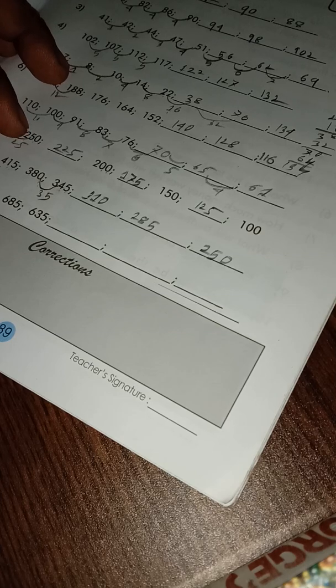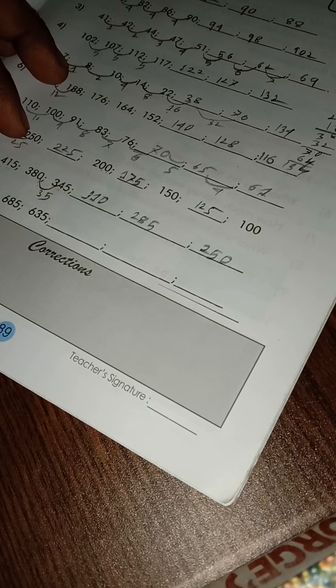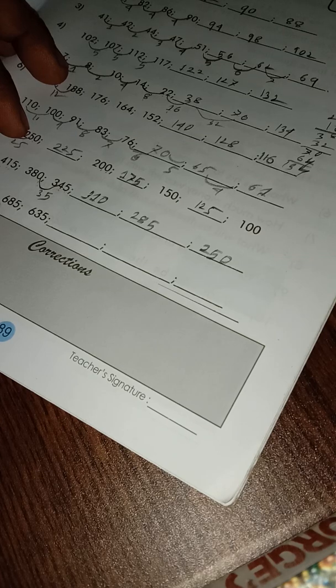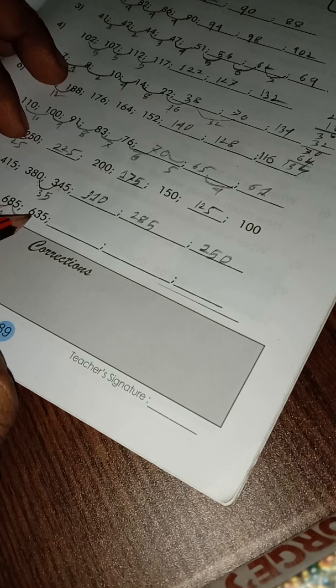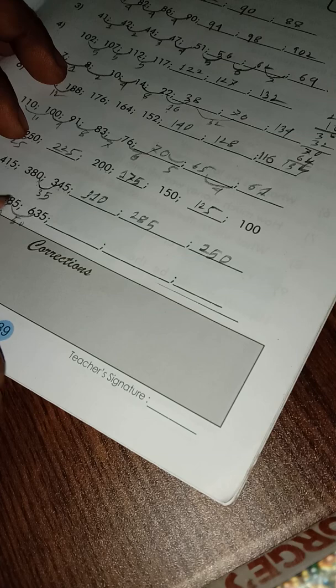735 minus 50 is 685, 685 minus 50 equals 635. So here is 600, so it should be 585.